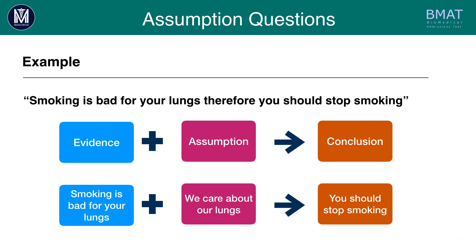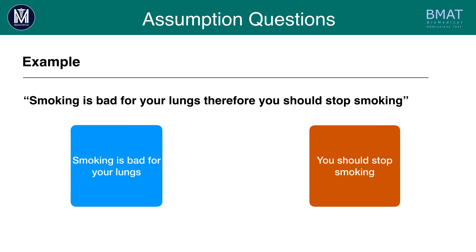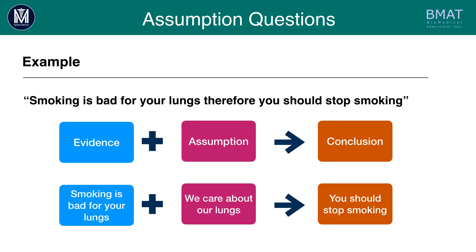Let's look at an example. 'Smoking is bad for your lungs, therefore you should stop smoking.' The conclusion is 'you should stop smoking' — 'therefore' is a trigger word. 'Smoking is bad for your lungs' is the premise or evidence. It seems obvious that if smoking is bad for your lungs, then you should stop. But why? Why are our lungs important? Is it important for us to stop damaging them? The assumption we're making without even thinking is that we care about our lungs. It's still an assumption — something implied without being explicitly stated.